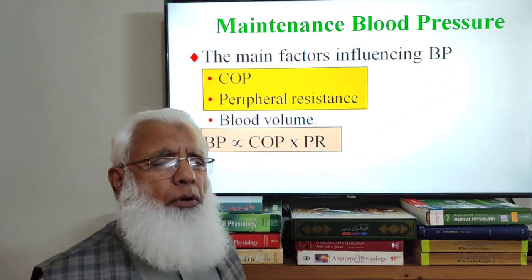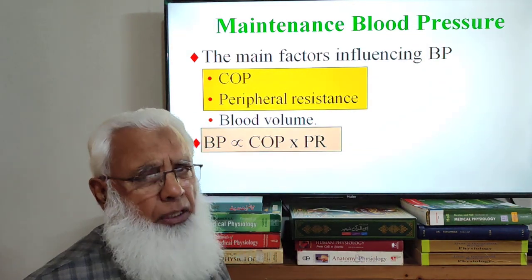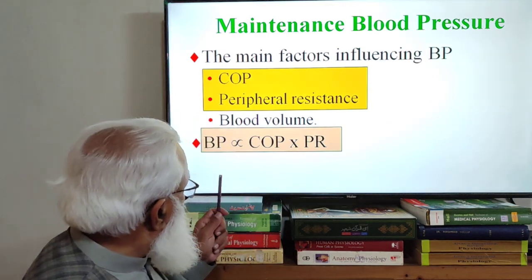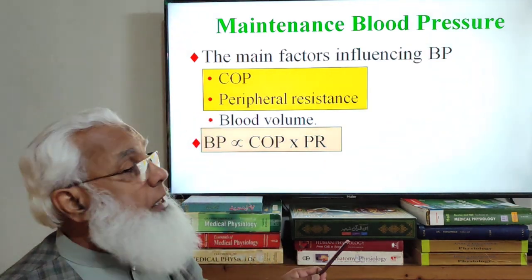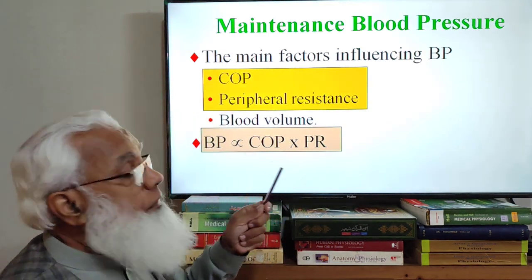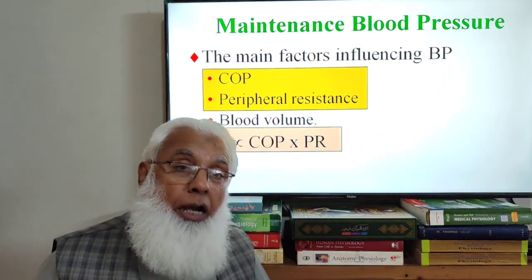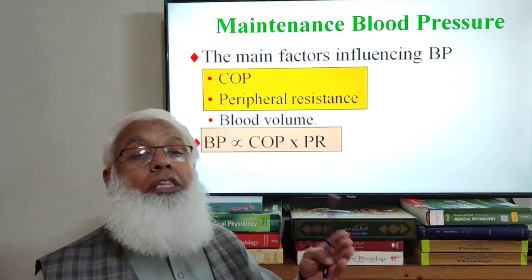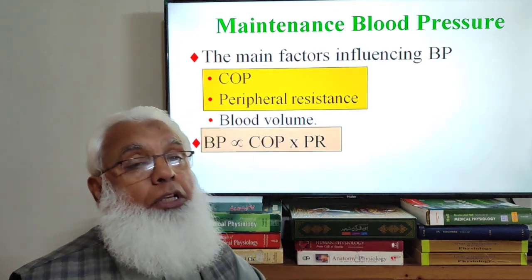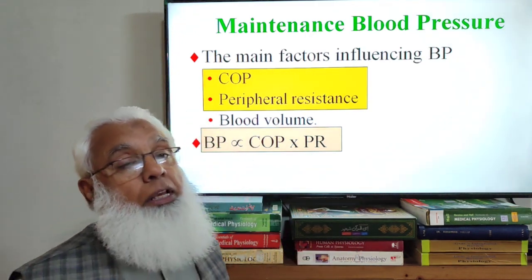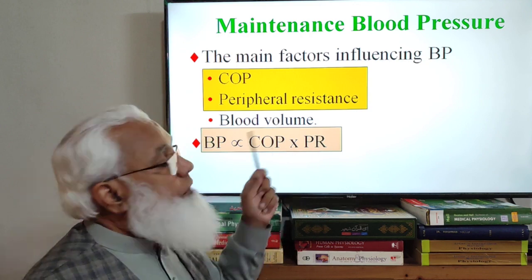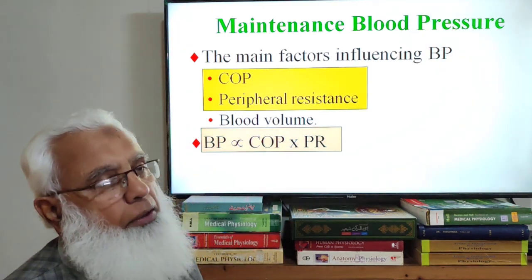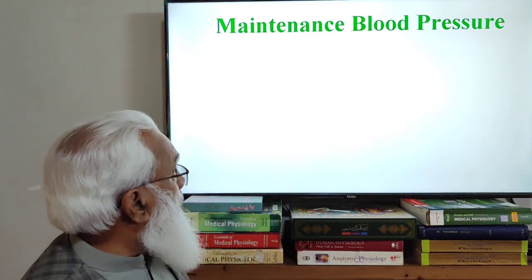This equation we have discussed several times when we were discussing blood vessels. We are going to see how these two factors — cardiac output and peripheral resistance — will be altered to maintain blood pressure. When blood pressure has to increase or decrease, these two factors will be changed so that maintenance of blood pressure occurs within normal limits.